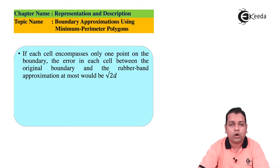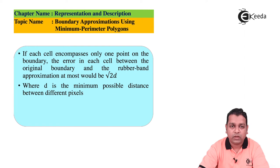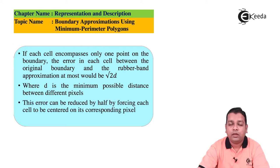If each cell encompasses only one point of the boundary, the error between the original boundary and the rubber band approximation is at most √2·d, where d is the minimum possible distance between pixels. This error can be reduced by half by forcing each cell to be centered on its corresponding pixel.